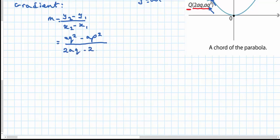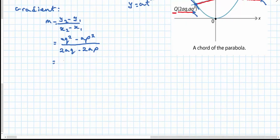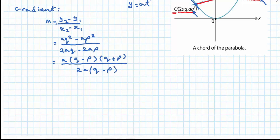I can take a factor of a out and factorize the difference of two squares, and take a factor of 2a out. I end up with my a's cancelling and my q minus p cancelling.